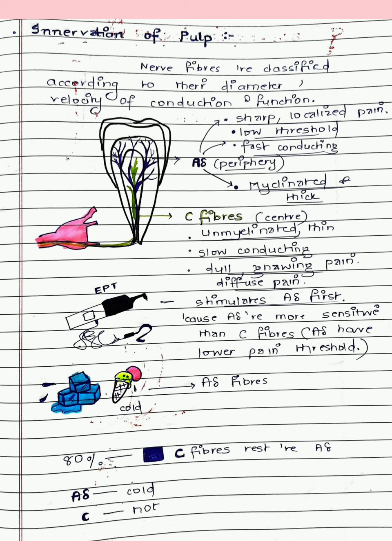A-delta fibers have a low pain threshold — they give an immediate response to any stimulus. They are myelinated, hence fast-conducting and thicker compared to C fibers. C fibers are located in the center, are unmyelinated and thin, slow-conducting, and are responsible for dull, gnawing, throbbing type of pain that is diffuse. Another reason why there is diffuse pain in the pulp is that the pulp lacks proprioception; proprioception is present in the PDL.